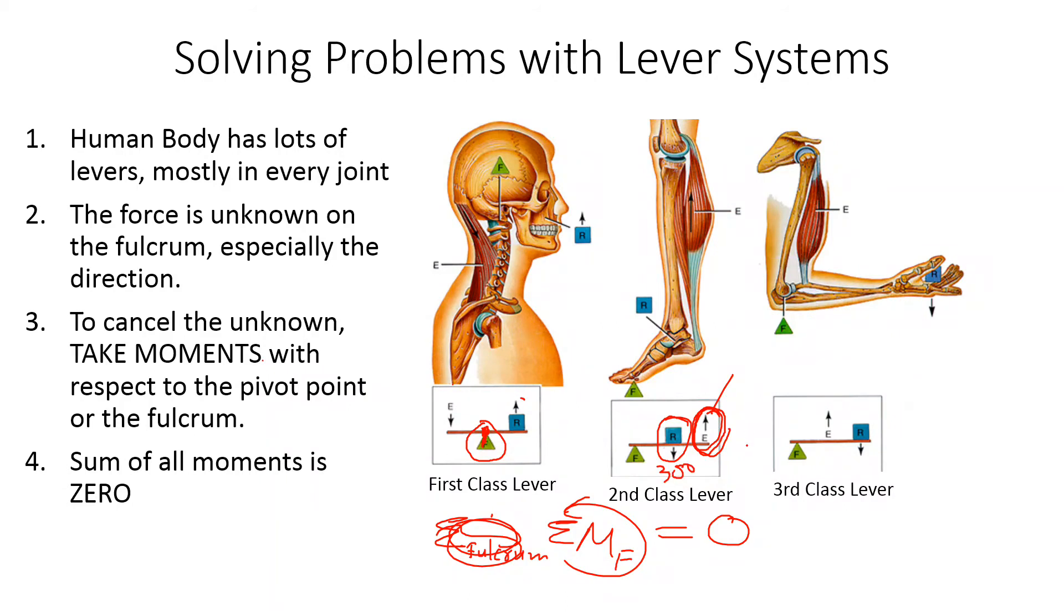pound force? So you could calculate whatever is necessary. To summarize: any pivot problem, any lever system problem, you just take moments with respect to the fulcrum, set the sum of all moments to zero, and then you can solve the unknown force.